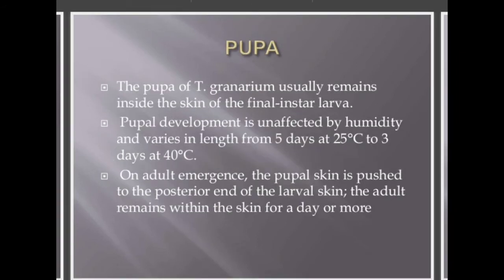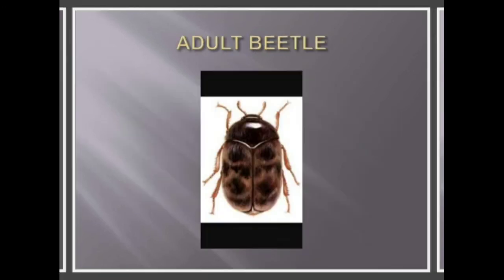When the larva becomes mature, it turns into reddish brown. Next is pupa. The pupa of the Khapra beetle usually remains inside the skin of the final instar larva. Pupal development is unaffected by humidity and varies in length from three to five days. The pupal skin is attached to the posterior end of the larval skin, and the adult remains within the skin for a few days or more.